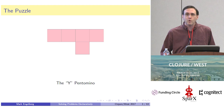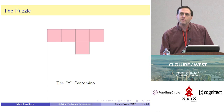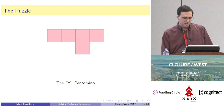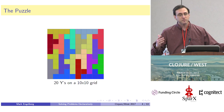With that in mind, I'd like to introduce a puzzle that's going to serve as a running example throughout this talk. It's called the Y-Covering Problem, and it's based around a piece called the Y-Pentomino. It's called that because if you stand it up on its side and look at it in just the right way, it looks kind of like the letter Y, and it's a pentomino because it's made up of five squares.